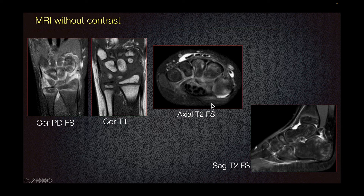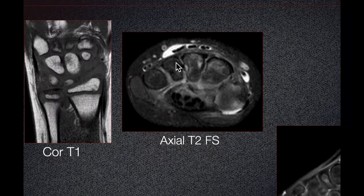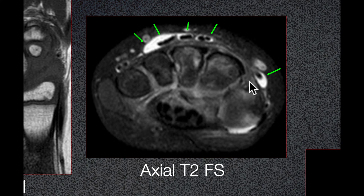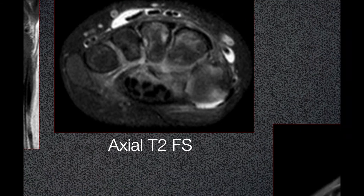The axial T2 fluid-sensitive images of this wrist demonstrate fluid from the second through the fourth extensor compartment, consistent with tenosynovitis, which can also be seen in the setting of JIA.